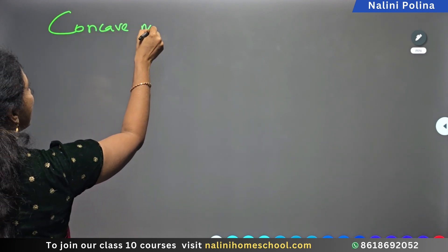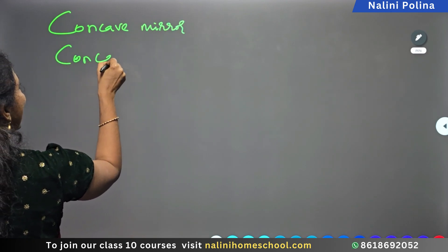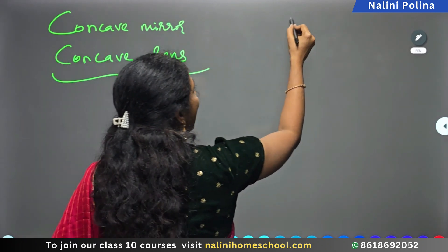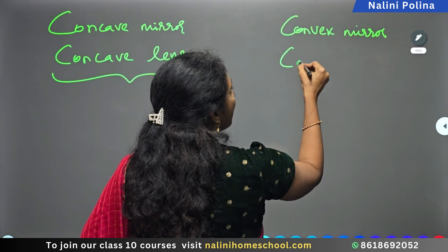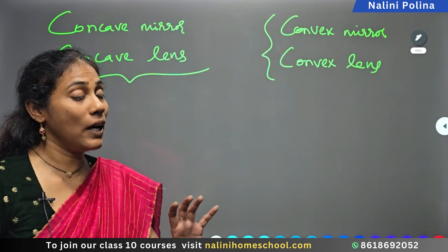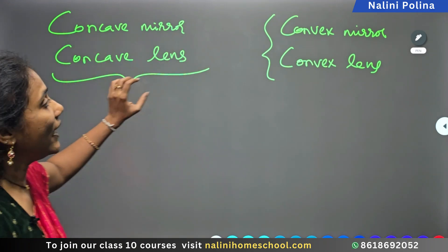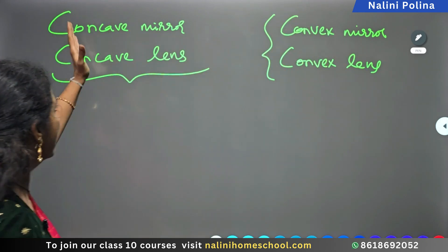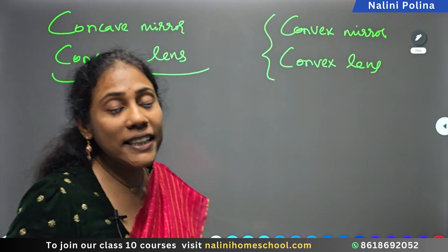For sign convention: concave mirror and concave lens have the same signs, whereas convex mirror and convex lens have the same signs. You apply one set of sign conventions for the concave pair, and another set for the convex pair. Note this down — it is very, very important.